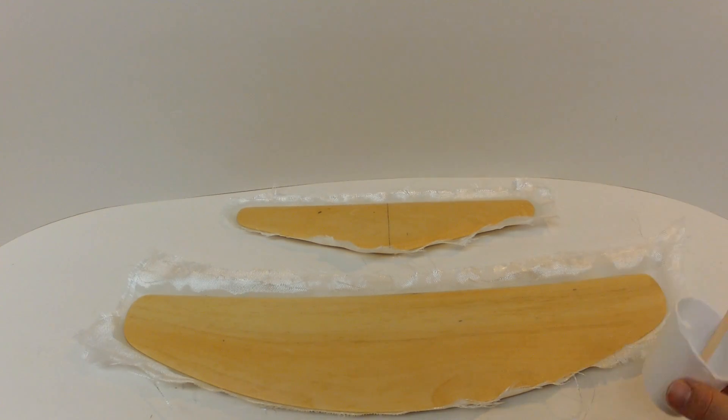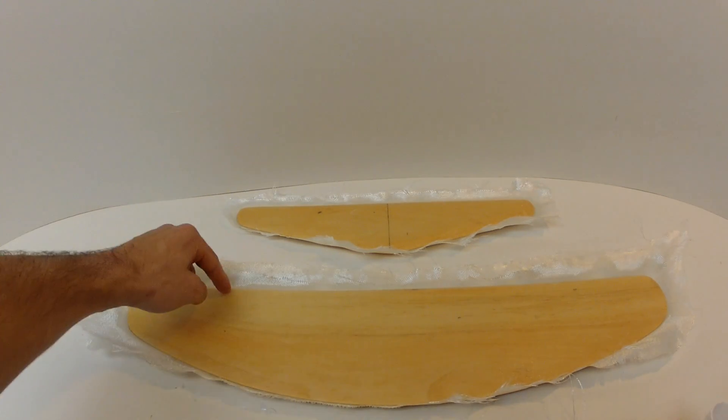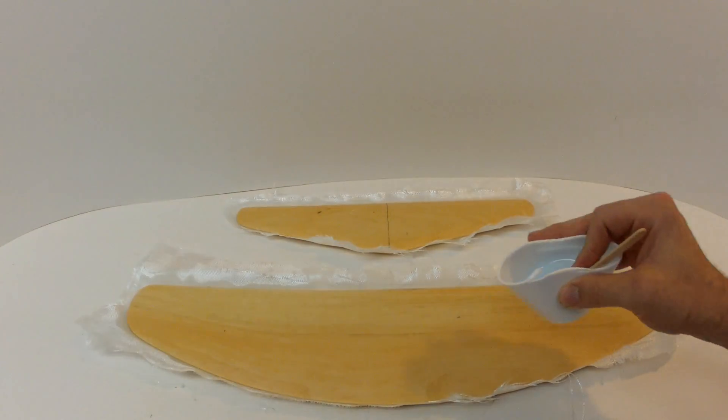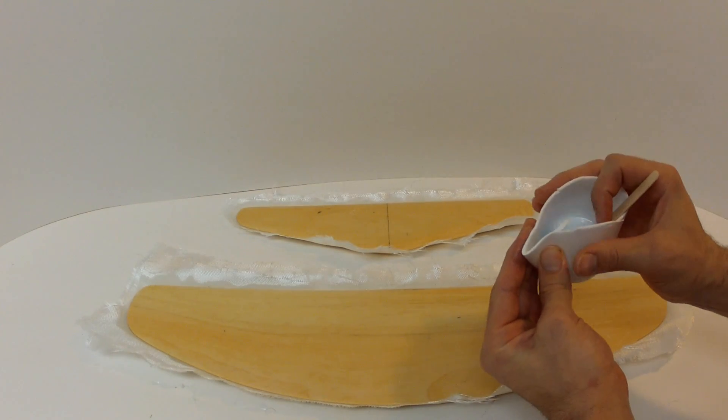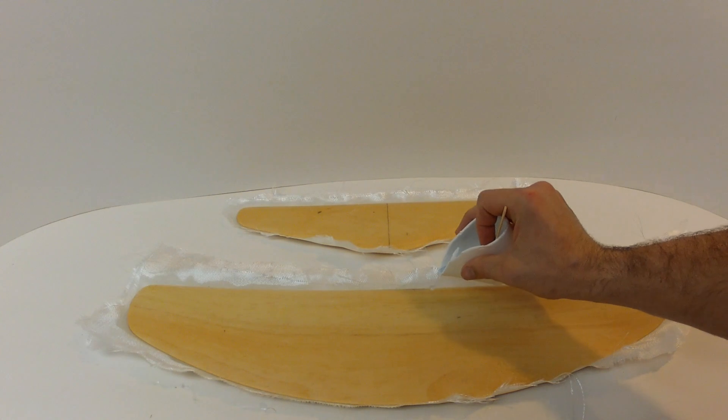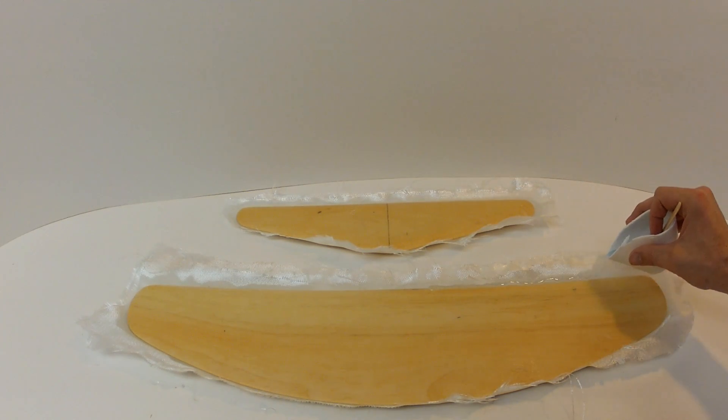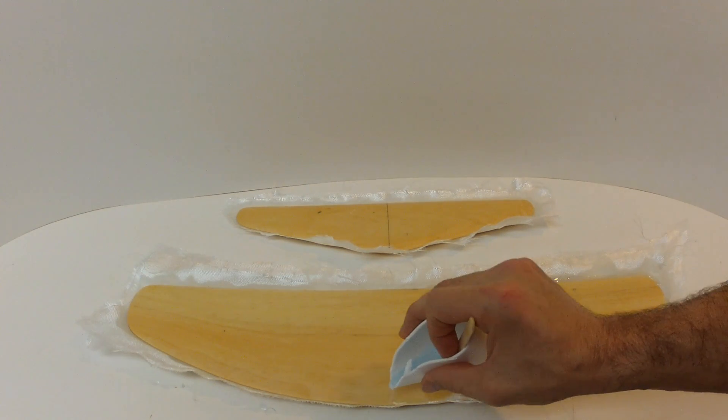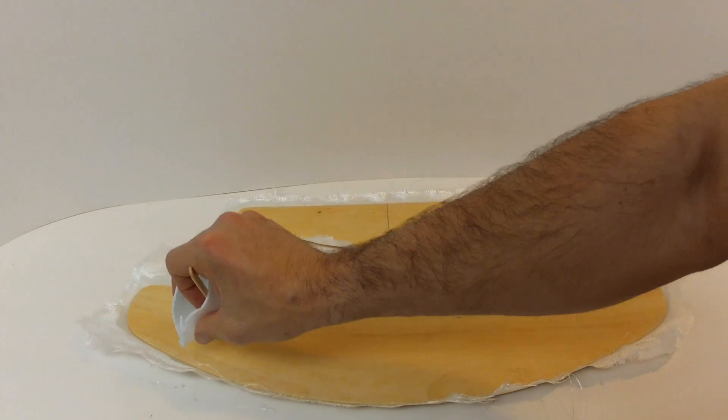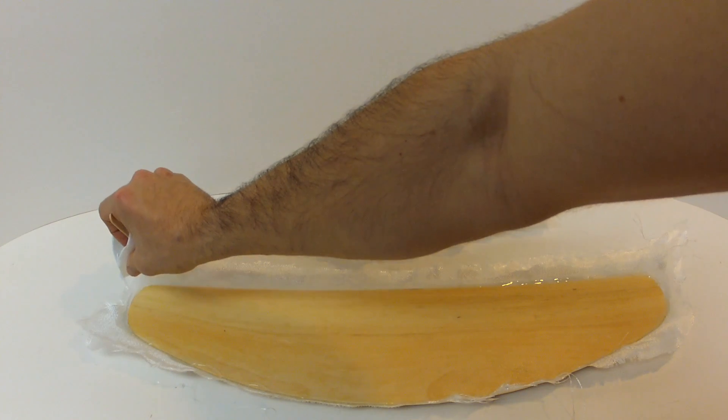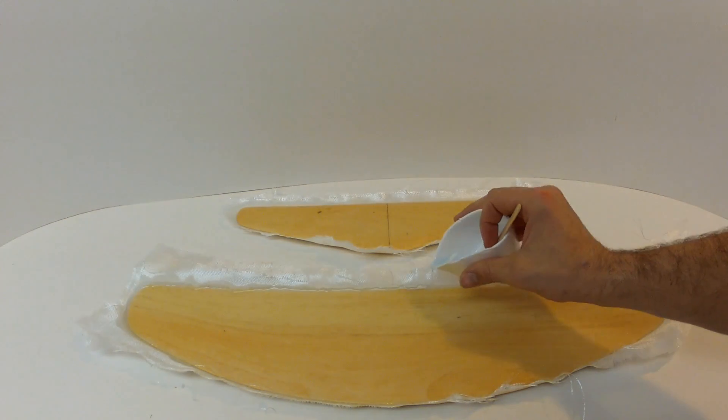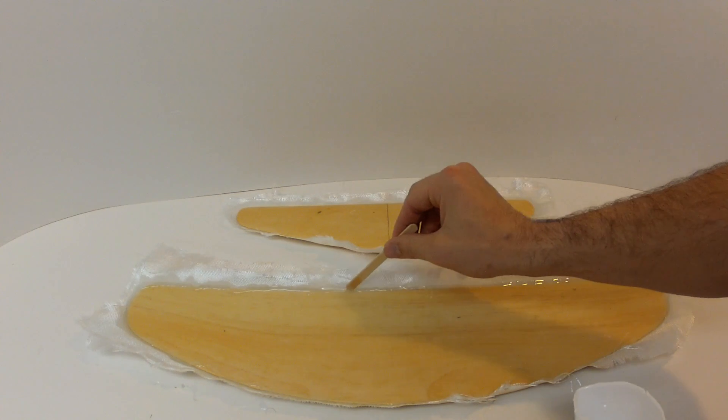So just mix a little bit of epoxy and pour from the cup right down into the gap, just a nice even bead best you can around the whole part. And then once you get around it's best just to take whatever stirring stick you're using and just make sure it's down in the seam where it should be. Now that I've been all the way around just make sure...